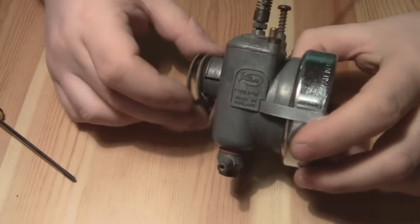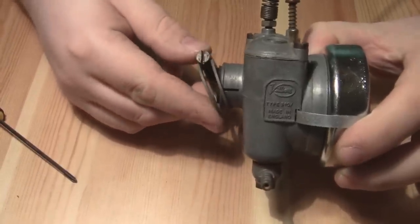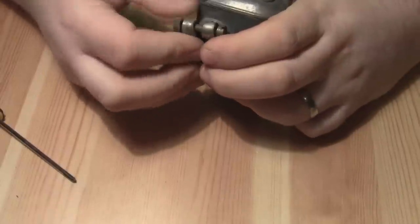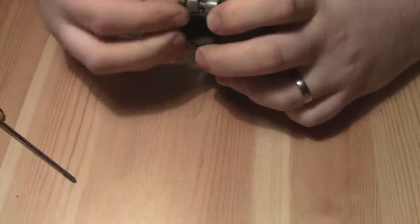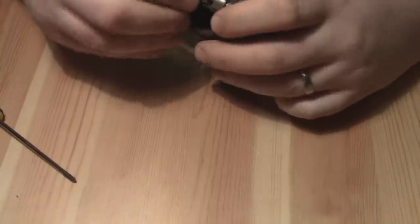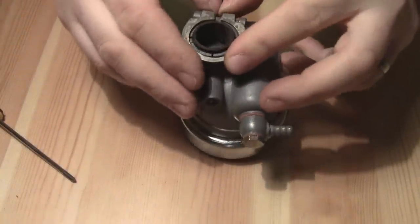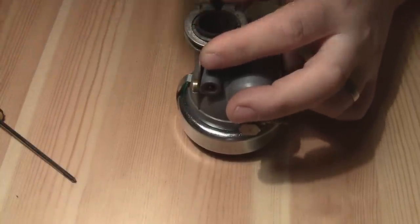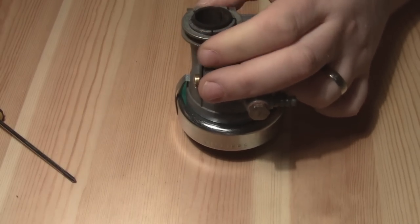Now I've just got to put this clip on the back here that holds the carb onto the governor body. A bit tight. There we go.